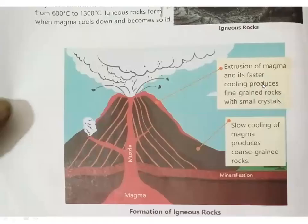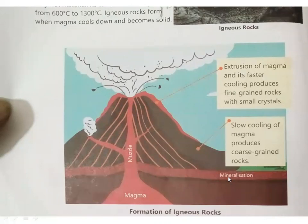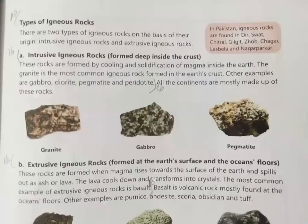Look at this. You can see that this magma is out of the ground — when the eruption occurs, material comes out of the ground. The slow cooling of magma produces coarse-grain rocks. This is called magma, and this is called igneous rock.